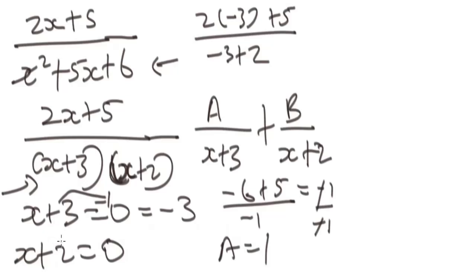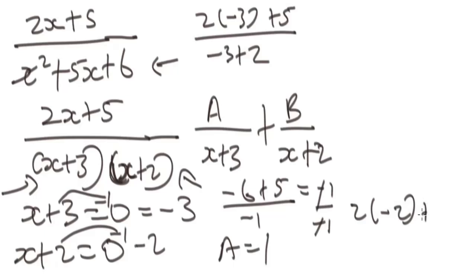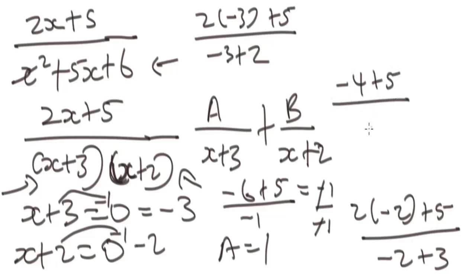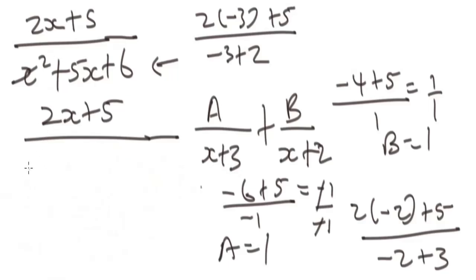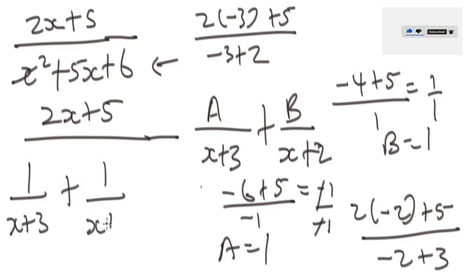For B, set x plus two equal to zero, giving x equals negative two. Substitute negative two into the expression but not into the x plus two factor. We get two times negative two plus five over negative two plus three, which is negative four plus five over one, giving one over one. So B equals one. Since A equals one and B equals one, the partial fraction is one over x plus three plus one over x plus two.